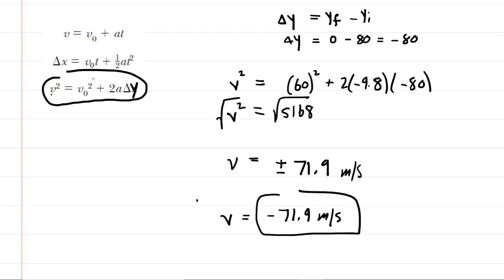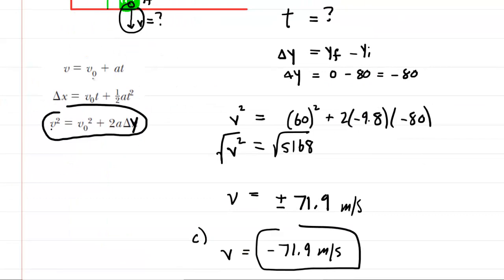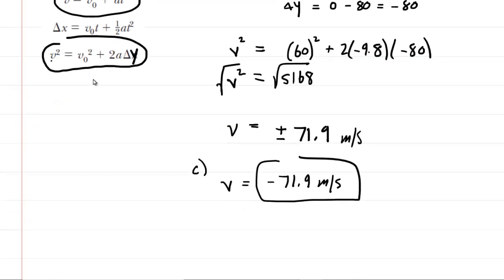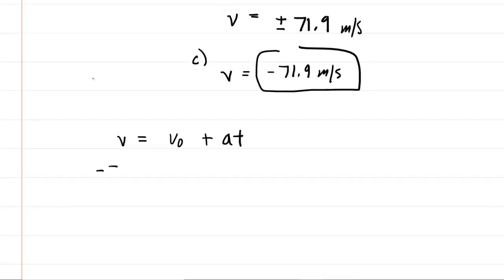That will be the answer for part c. And then for part b, we can now go back and figure out the time that it takes to hit the ground. And we can use the first equation from kinematics to do so. So let's jot that down here below. We have the final velocity equals the initial velocity plus acceleration times time. We just determined the final velocity at ground level was the negative 71.9. The initial was positive 60. We have plus negative 9.8 times the time.